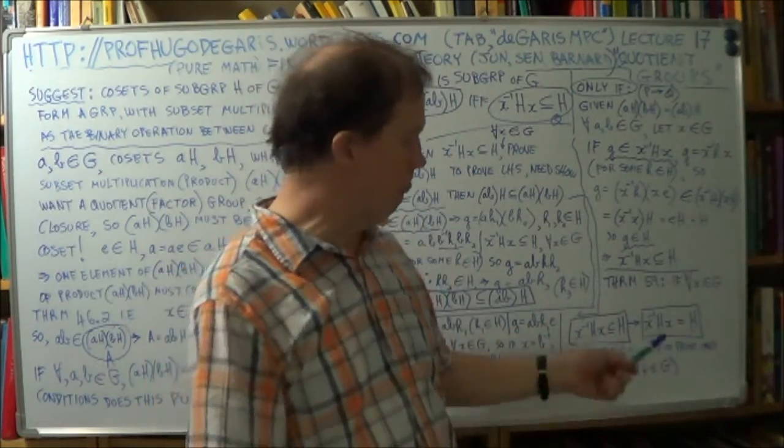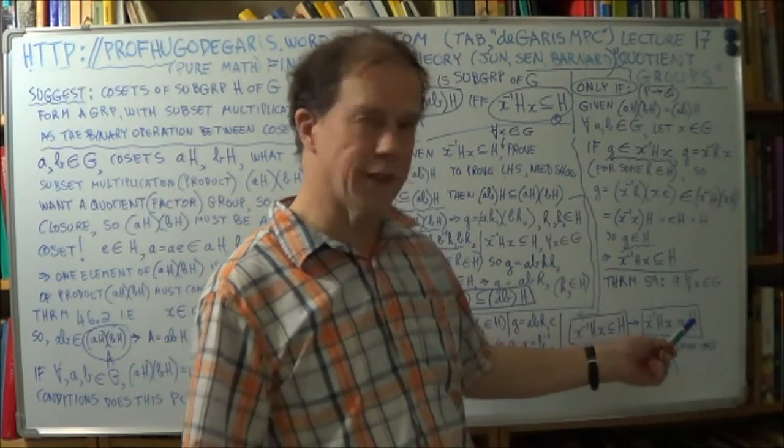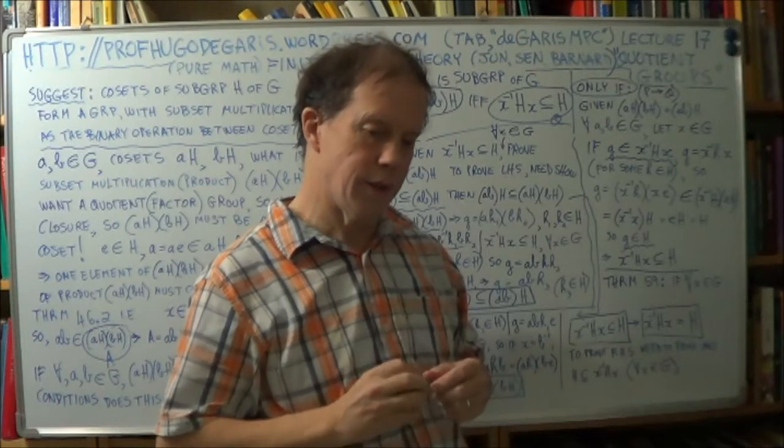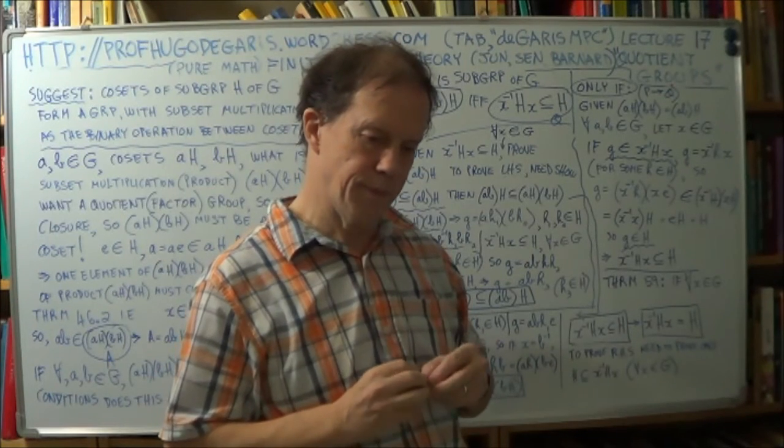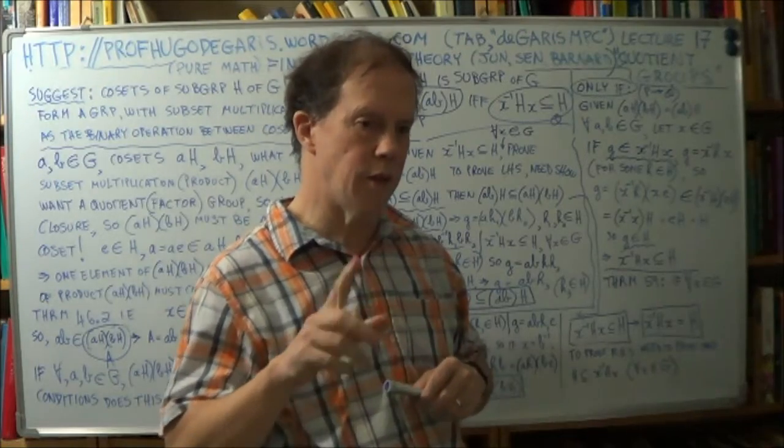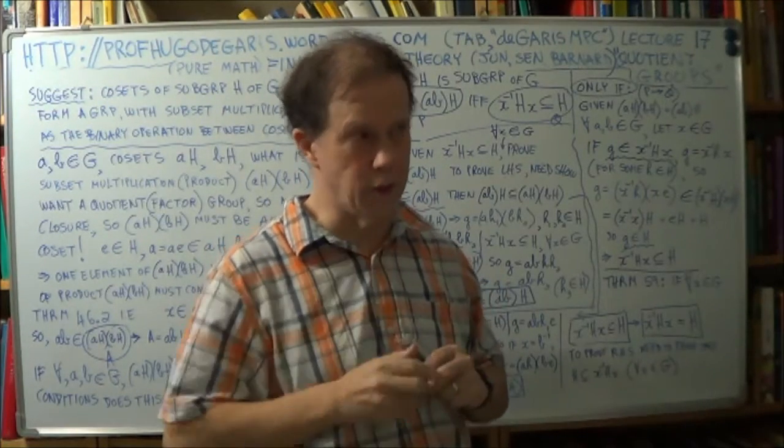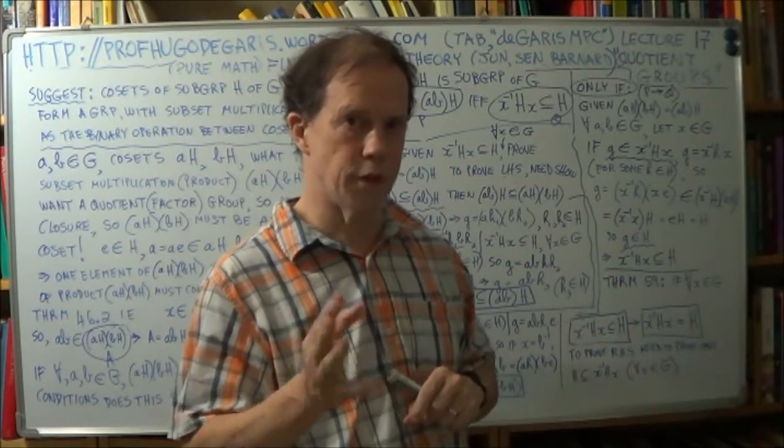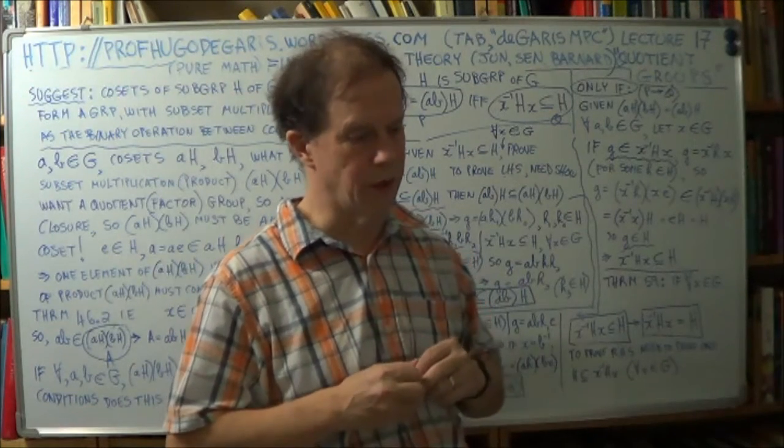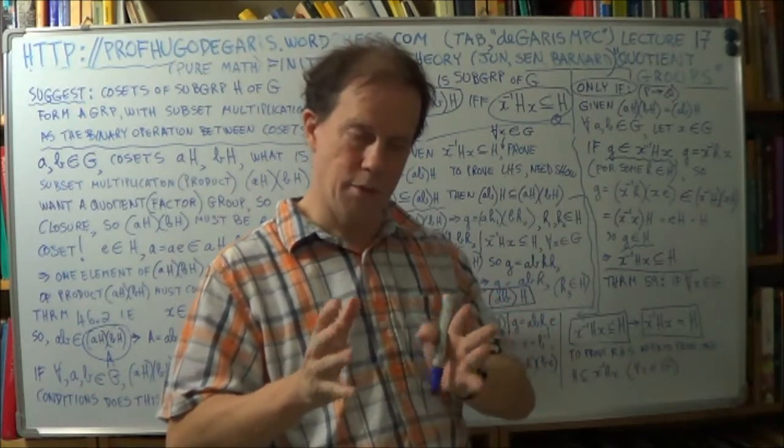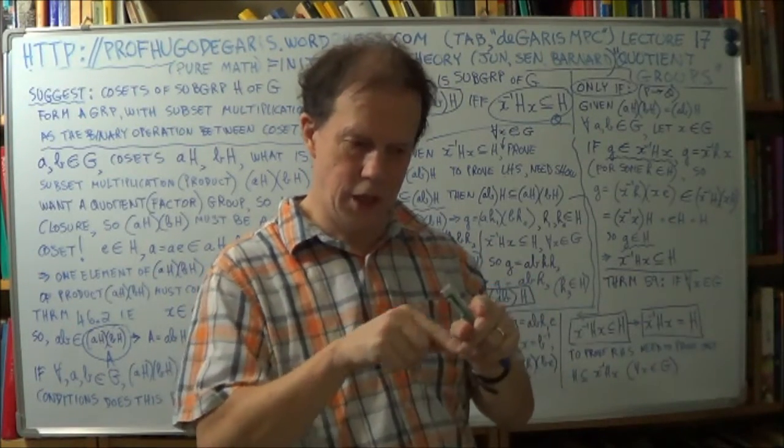In fact, the third example, you know, we did a group table, and the subgroup H that we chose was E. This is in the context of the group D3, the symmetry operations of an equilateral triangle. Now, the H that we chose, the subgroup, was the set E and B.